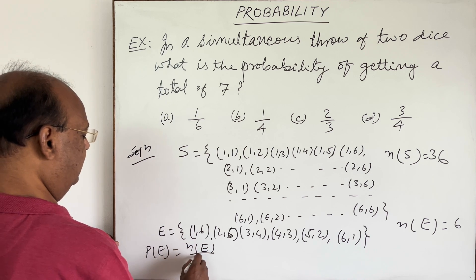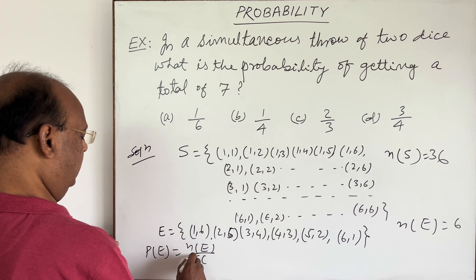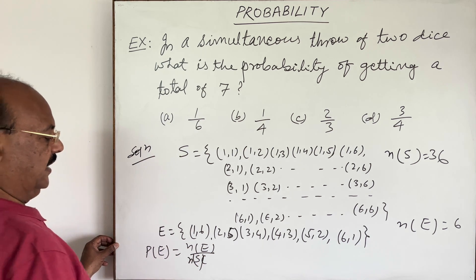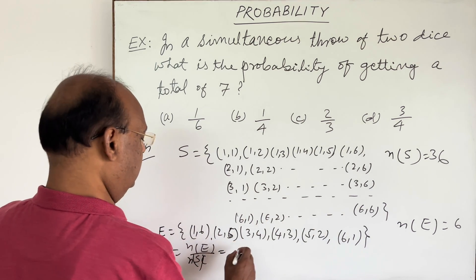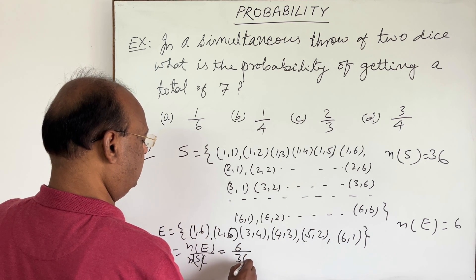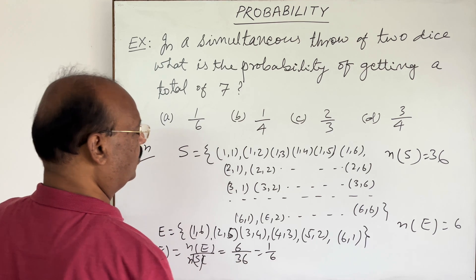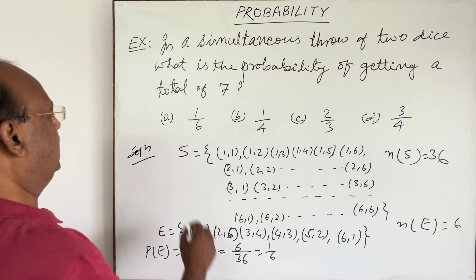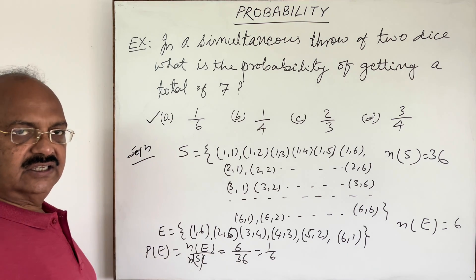So n(E) is 6 and n(S) is 36, so this equals 1/6. Which option is correct? Option A is correct.